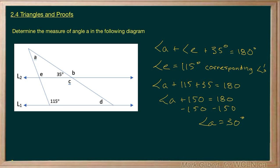You could do the same sort of reasoning by saying that angle A plus angle D plus 115 equals 180. This would also work because angle D is equal to 35 because they are corresponding.